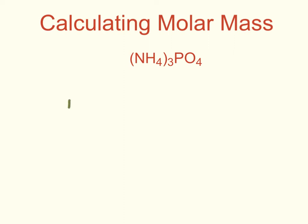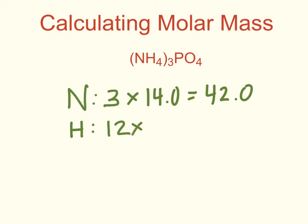So when I start listing my elements, I have three nitrogens because this three distributed into the nitrogens. I'm going to take my three nitrogens times the atomic mass of nitrogen, which is 14.0. I do the same thing for my hydrogens. So if I look, my three distributes in where I already have four hydrogens. So I take three times four and I get 12 hydrogens times the atomic mass of hydrogen, which is one. Twelve times one is 12 grams.